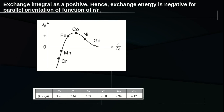This figure shows the exchange integral as a function of R/R_D, which is the ratio of the inter-atomic distance R to the radius of the 3D sub-shell R_D. The y-axis gives the exchange integral value J_ij, and the figure illustrates the relation between the exchange integral and this ratio. For iron, cobalt, and nickel, the exchange integral value J_ij is positive, so the spins of 3D electrons spontaneously align in the same direction to reduce the exchange energy.